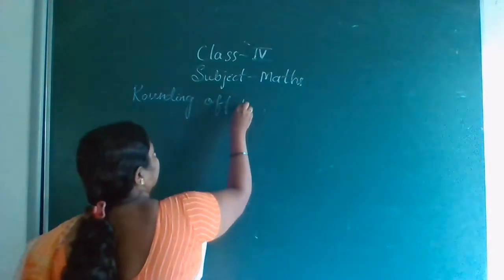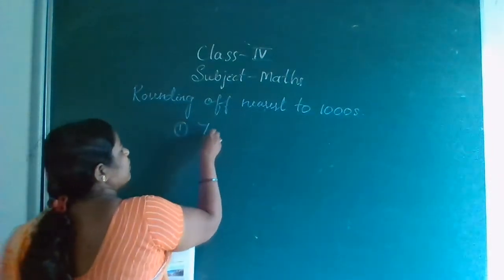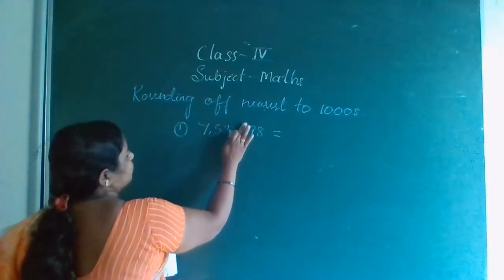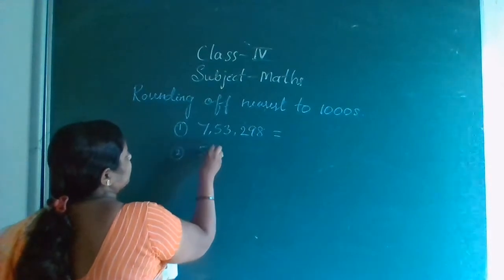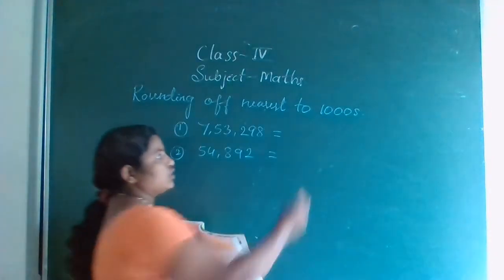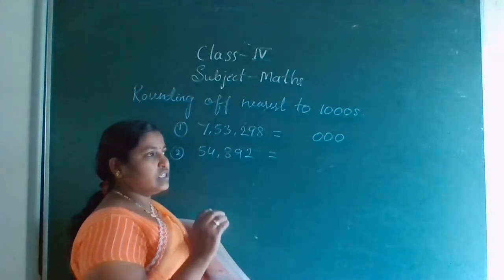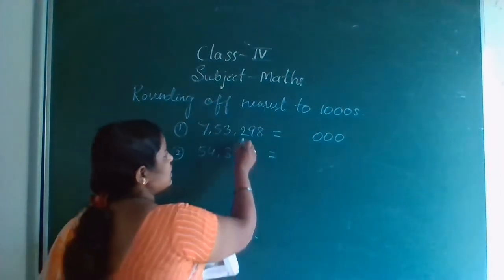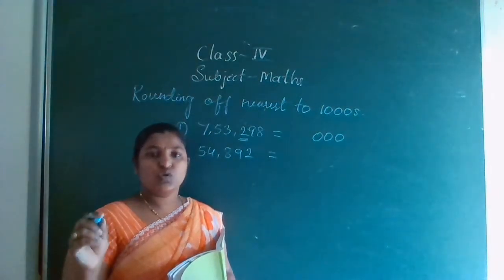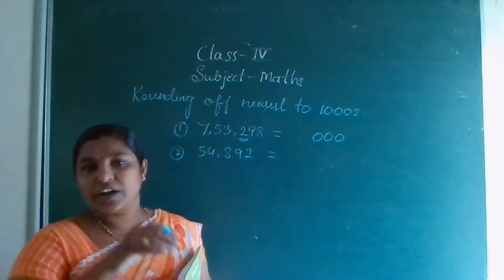Rounding to nearest 1000 — once again I will explain here. Take one example: 53,798. Rounding this number to nearest 1000. So 1000 is having how many zeros? 3 zeros. 1000 means before which place? That is 100. You should see the 100's place. If it is rounding of nearest to 10s, you should look at 1's place; rounding of nearest to 100, you should look at 10's place.